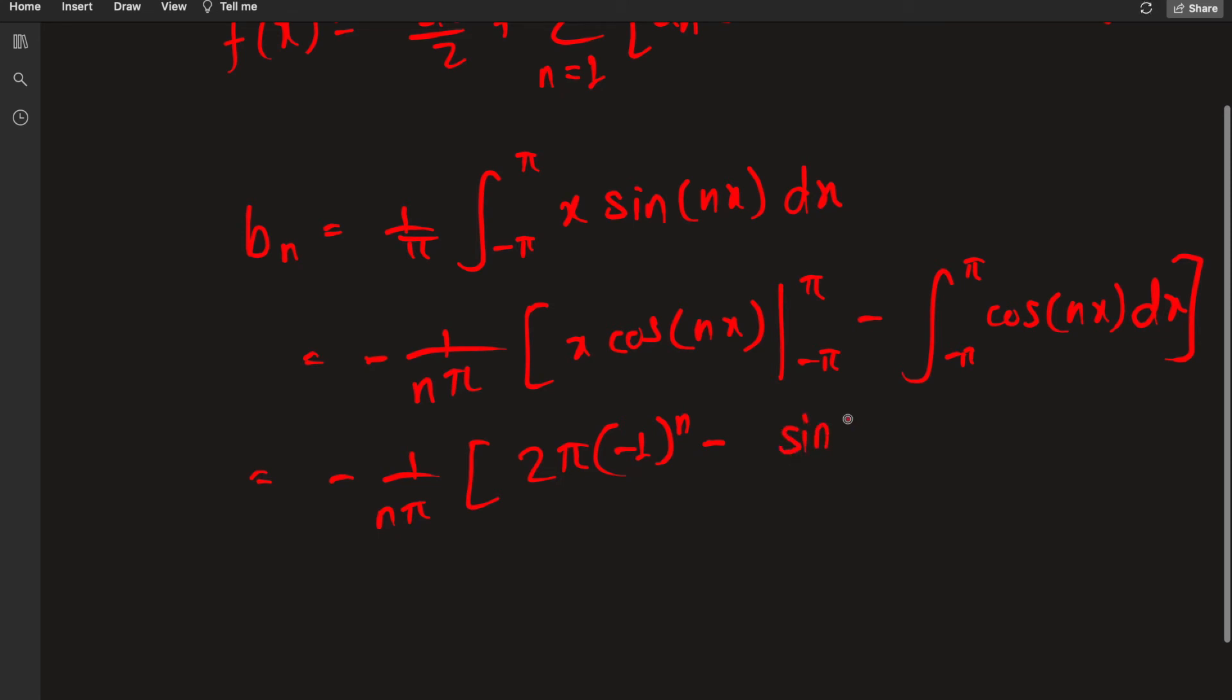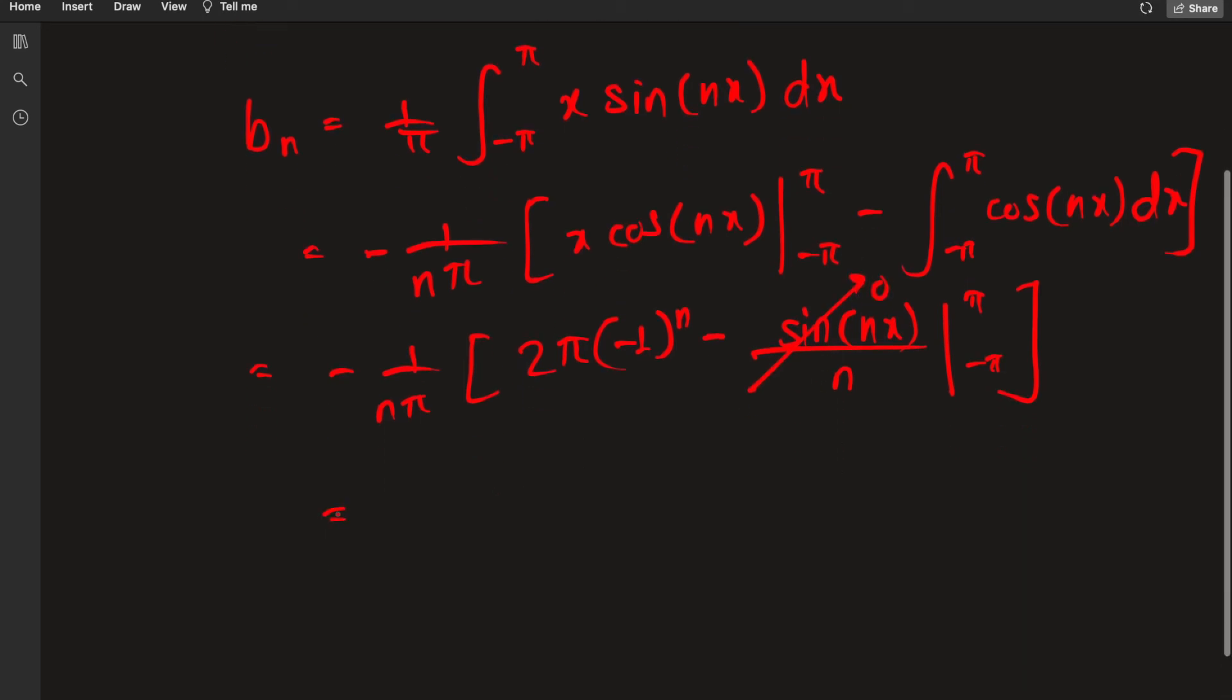I have (-1)ⁿ because of the cosine of nπ, minus, integrating the sine of nx divided by n, evaluated at π and negative π. Well, sine of nπ is zero, so this just goes to zero.